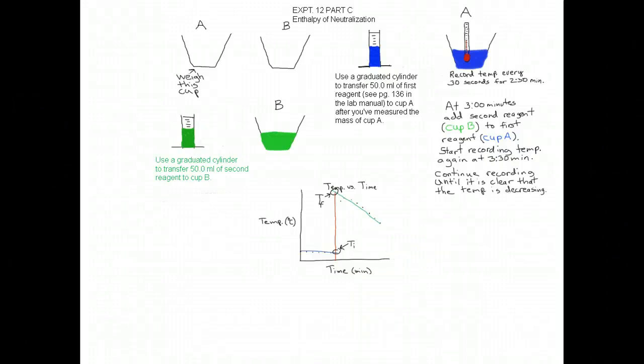This is part C of experiment 12. Here you're going to be finding the enthalpy of neutralization for four different combinations of reactants. You follow the same procedure for each of the four rows, so you're going to do this four times.